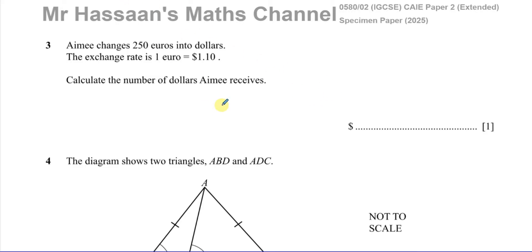Now we have Amy changes 250 euros into dollars. The exchange rate is 1 euro is equal to 1.10 dollar. So I'm going to write down, the way I like to do this kind of money exchange type of question, I leave a space, I put the exchange rate, so 1 euro, this is a symbol for euro, if you don't know you can just write euros, is equal to 1.10 dollars. And we want to find out how many dollars that Amy will get for 250 euros.